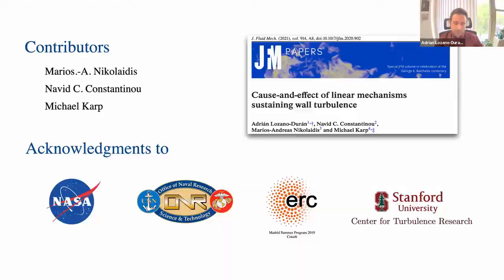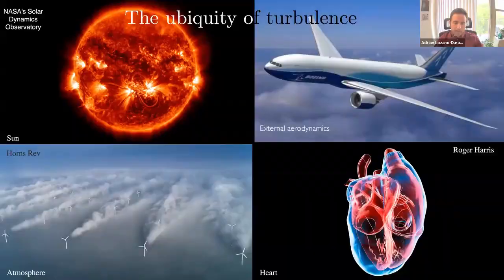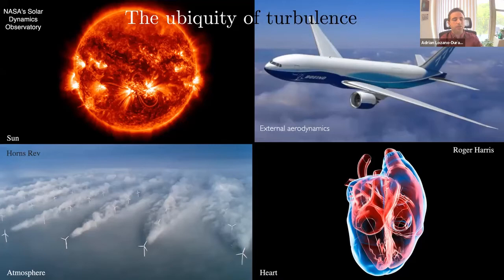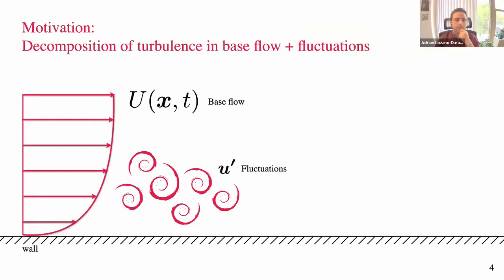One of the key reasons we want to understand turbulent flows is that they are everywhere — present in many different problems at many different scales. You can think of very large-scale planetary problems, atmospheric flows, external aerodynamics where vehicles are covered in a turbulent boundary layer, bio-applications, and even your heart pumping blood, where typical velocities and scales are already large enough to result in turbulent flow.